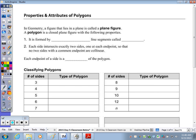It is formed by how many line segments? How many line segments do you need in order to form a polygon? At least three, and those line segments are called sides.